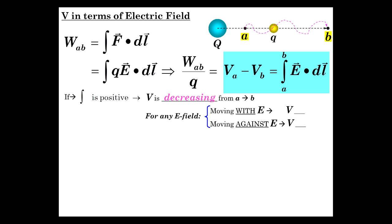For any electric field, if you're moving with E or against E, you can make the following statement. If this is positive, that means since you're integrated in this direction, the DLs are in this direction, the E must be in that direction for this to be positive. Well, if the E is in this direction, then if we go with E, we're moving with E in that direction, then the potential must be going down.